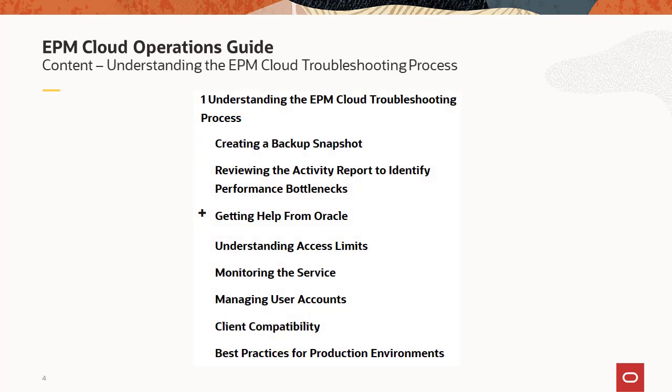What is the content of the EPM Cloud Operations Guide? It starts with understanding the general troubleshooting process of EPM Cloud. It answers various questions related to EPM Cloud monitoring and troubleshooting. For example, one major question you would have is how to create a backup snapshot — it answers that question.